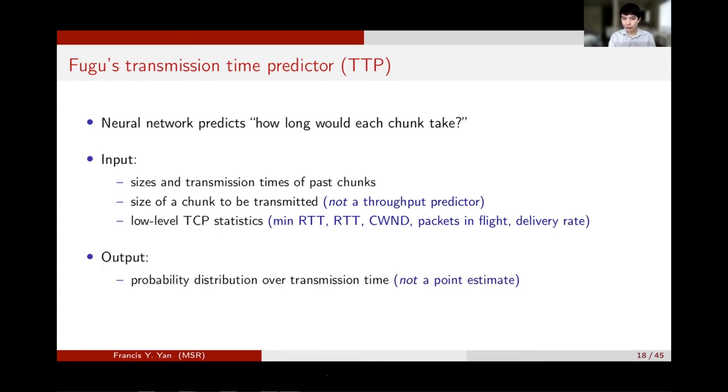Another uncommon feature of the input is low-level TCP statistics from the kernel, such as RTT and congestion window size. This is weakly crossing layers with information flowing from transport layer to application layer. So this is the input or the state that Fugu observes from the internet. The output of TTP is unusual as well. Instead of a point estimate, TTP outputs probability distribution over transmission times, and we found it to be useful when maximizing the expected QoE.